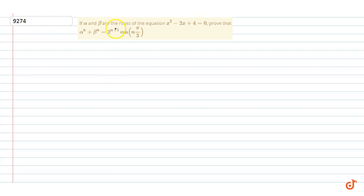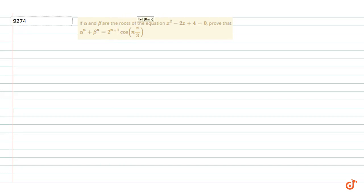In this question, if alpha and beta are the roots of the equation x² - 2x + 4 = 0, then prove that alpha to the power n plus beta to the power n is equal to 2 to the power n · cos(nπ/3). Here we have x² - 2x + 4 = 0.